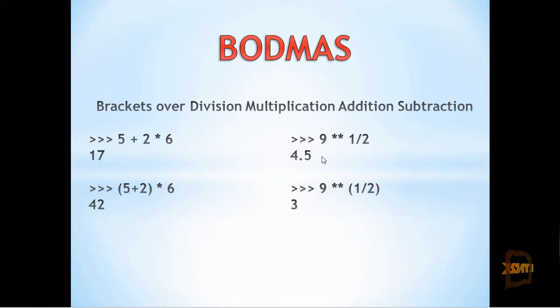In this example, we're doing 9 to the power of 1 which gives us 9, then dividing the result by 2, which gives us 4.5. In the bottom example, we're doing 9 to the power of the result of 1 divided by 2, which is the square root of 9, giving us 3.